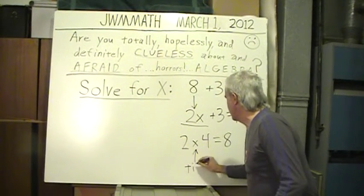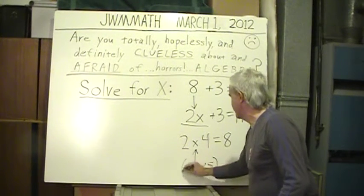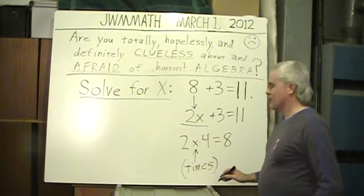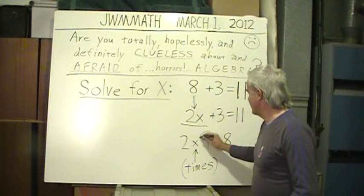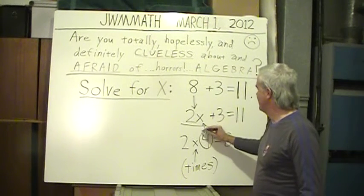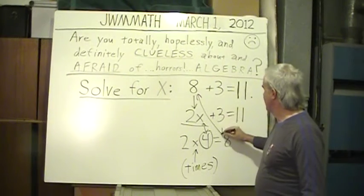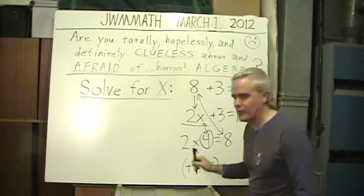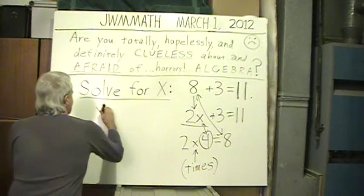In algebra, you won't see the x as a time symbol much. So that's just multiplying. Therefore, x equals what? x is going to equal 4. 2 times 4 is 8. 8 plus the 3, then leads to our 11 in our original equation. So, x equals 4.